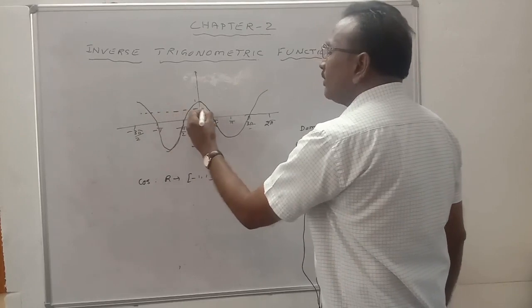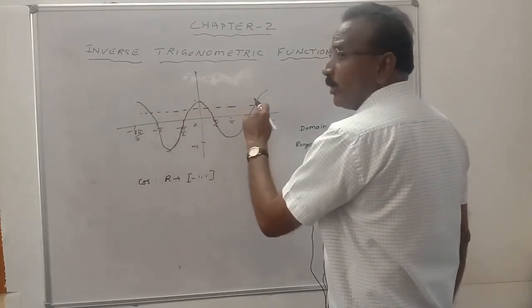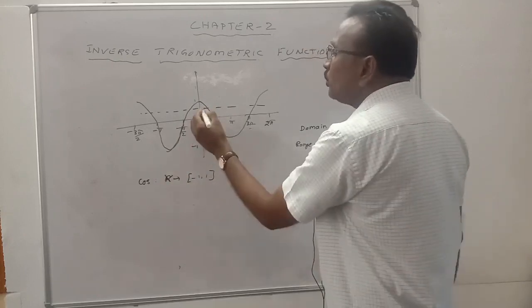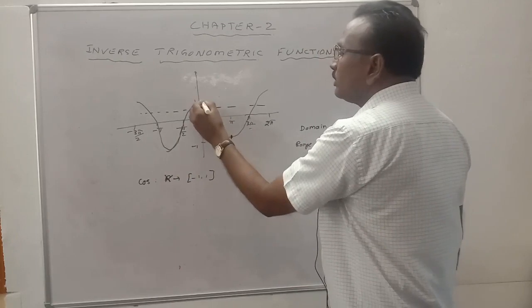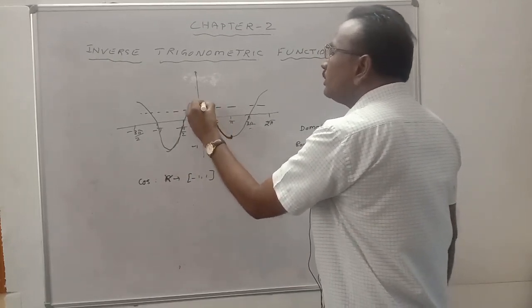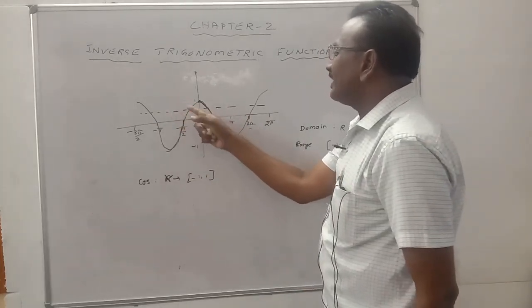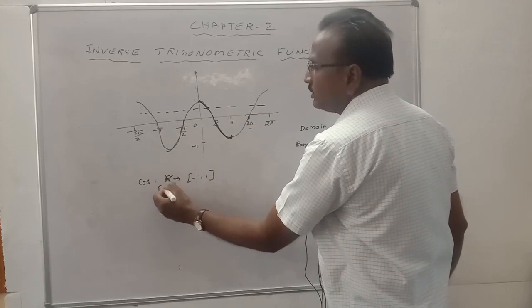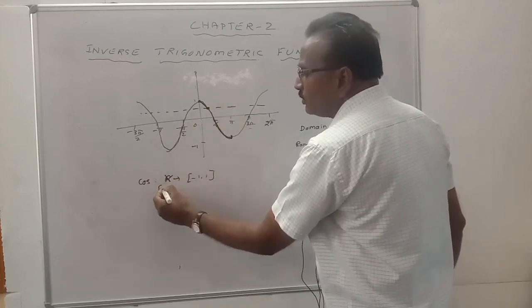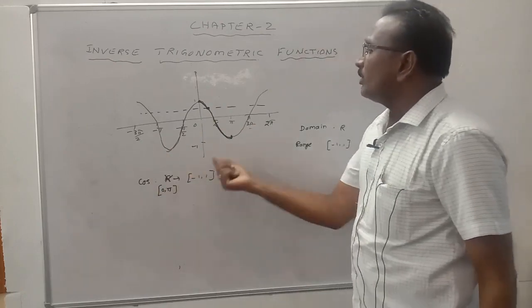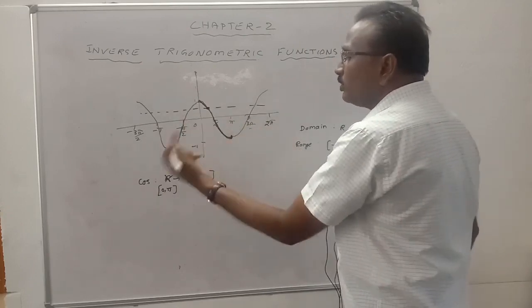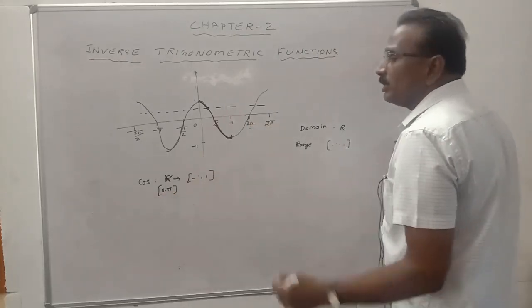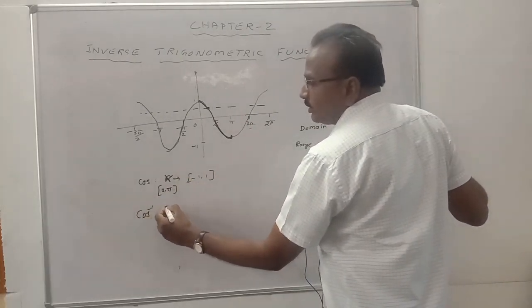For the cosine function, a line parallel to the x-axis cuts the graph at more than one point, so cosine is not one-to-one over all real numbers. If we restrict the domain to 0 to pi, a line parallel to the x-axis cuts the graph at only once. Therefore, cosine is one-to-one and onto in the closed interval 0 to pi, so cosine inverse exists.